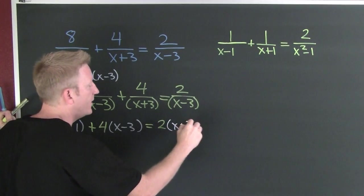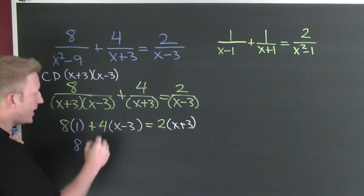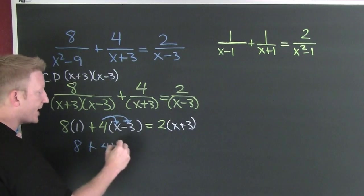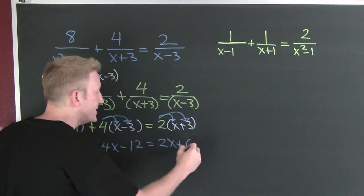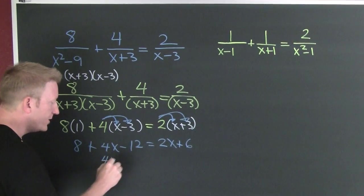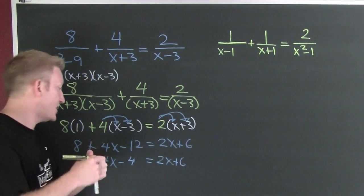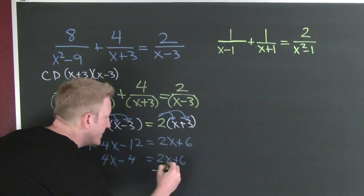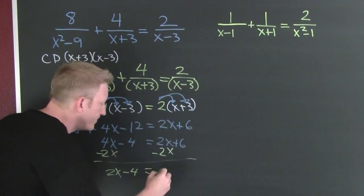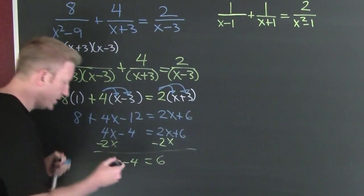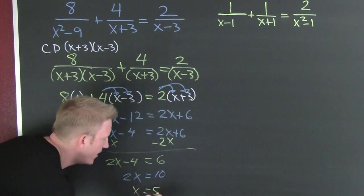So what we're left with is a linear scenario. Here we go: eight plus four(X minus three) equals two(X plus six). Collect and combine: four X minus four equals two X plus six. I've got X's on both sides — subtract off that 2X from both sides. So 2X minus 4 equals 6, then 2X equals 10, and X equals five.